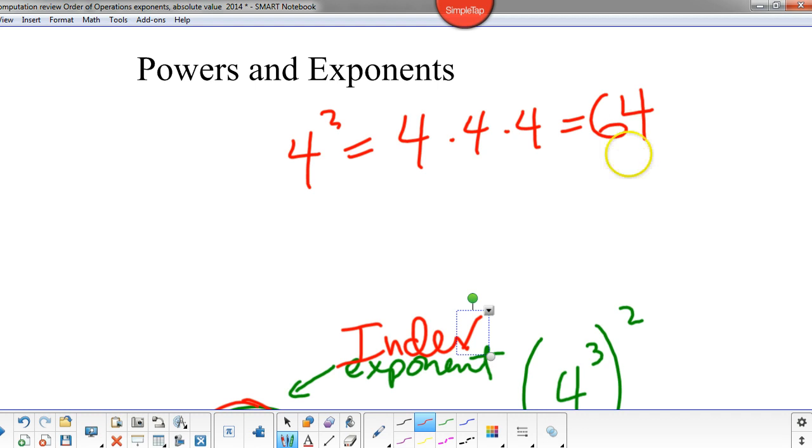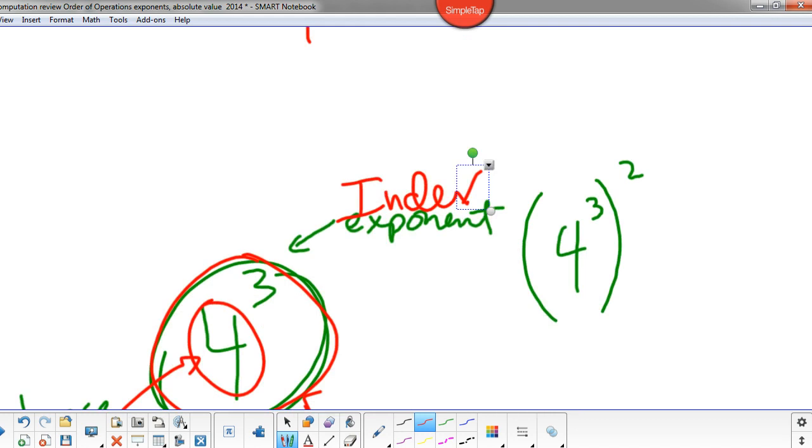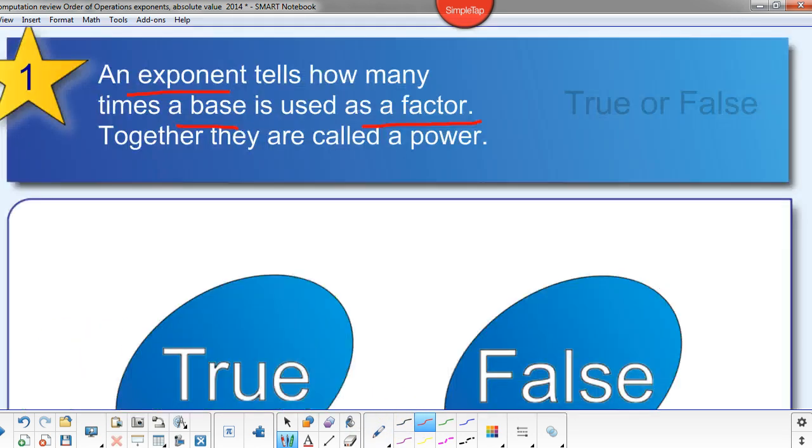We're taking a look at this other one that I have here, four to the third to the second. Well, it would really mean four to the third times, we're using four to the third now as the base and two as the exponent. So four to the third times four to the third. And then we could write this out. We know that's the same as four to the sixth. We'll get into exponent rules when we get into chapter four. But just basic reminders about exponents.